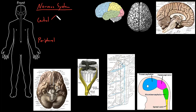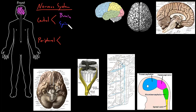Both of those are themselves divided into two main parts. The central nervous system is made up mostly of the brain, which is in the head, and the spinal cord, which is in the spine — this long, thin tube-like structure that goes down the spine.